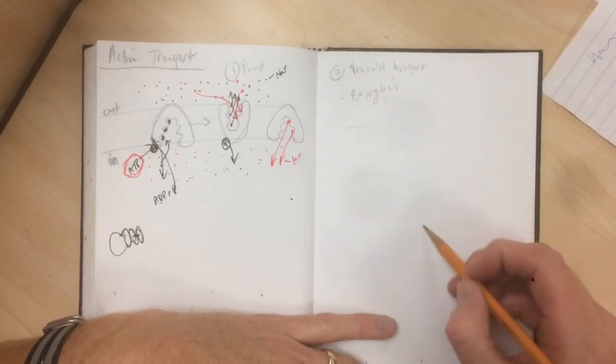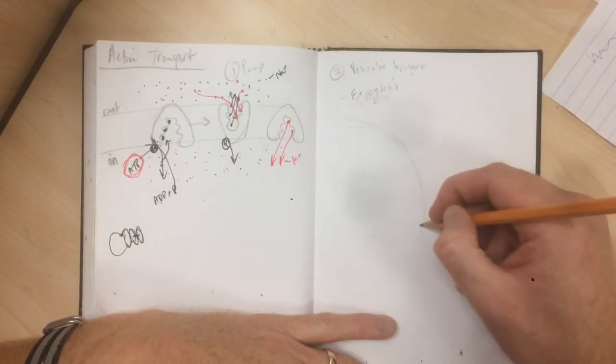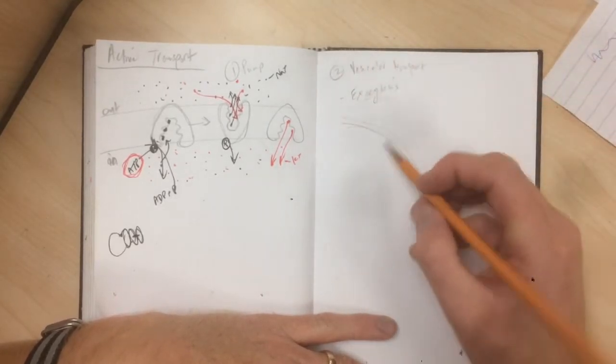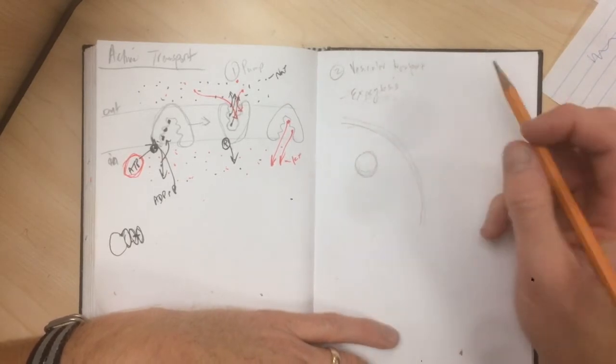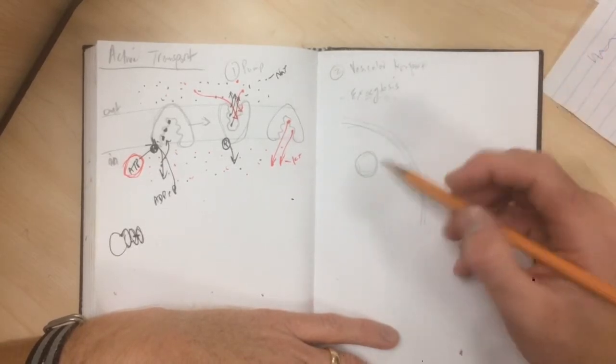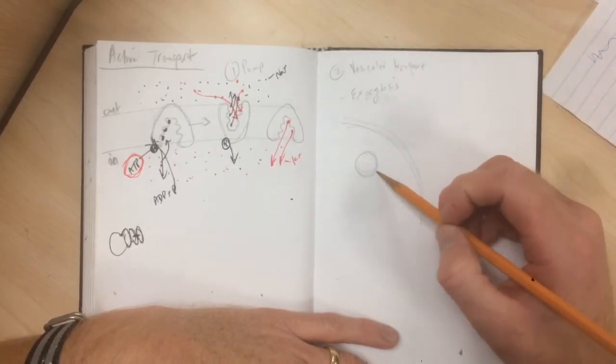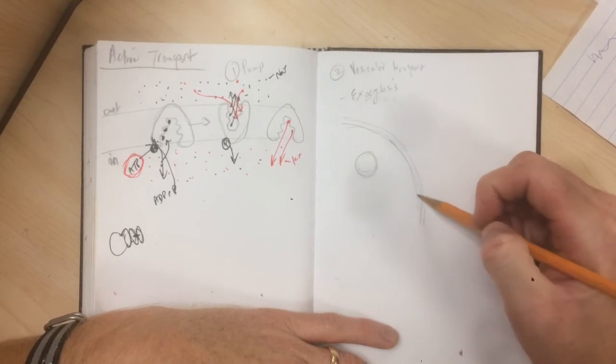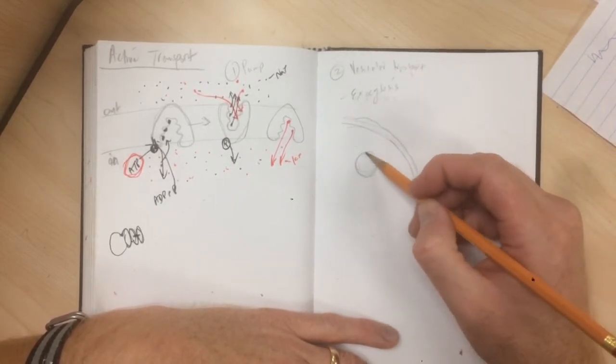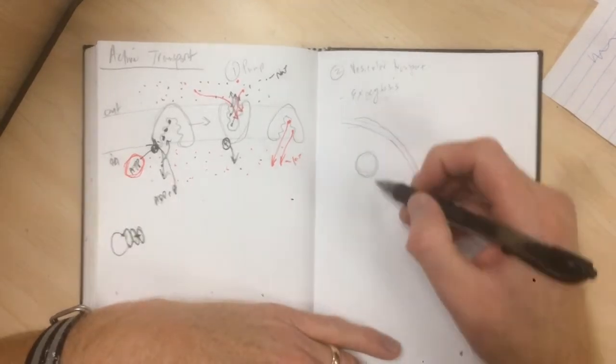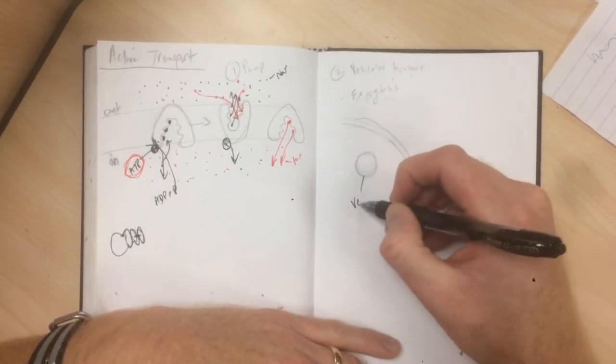So here we have the side of a cell. We have the cell membrane, and on the inside we have a sphere, tiny little sphere. I'm drawing it like a circle, but it's really like a three-dimensional sphere, and it's made out of the same cell membrane that encases the whole cell. Now, this sphere has a name. It's called a vesicle.